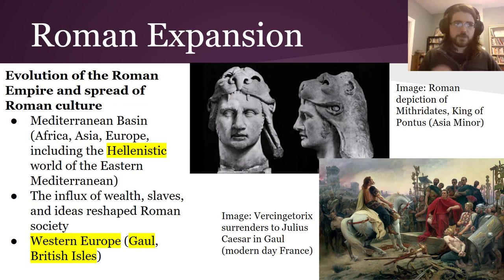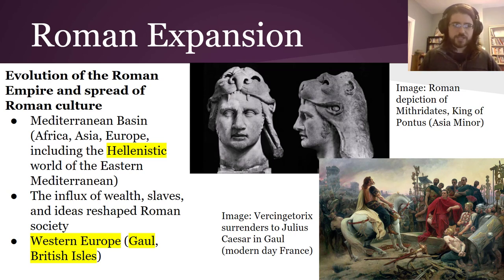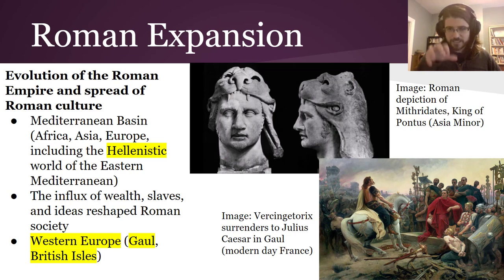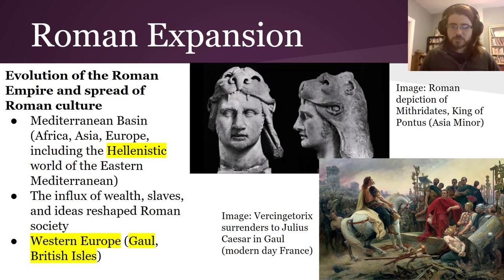The period of Roman expansion during the Roman Republic saw their armies march across much of the Mediterranean basin. They took areas in Africa, Asia, Asia Minor, and Europe, including the Hellenistic part of the world — the part that had Greek culture in it. There's an image of Mithridates, the king of Pontus in Asia Minor, who was an enemy of Rome that Rome fought against in some wars, and Rome conquered all the way over in that direction.